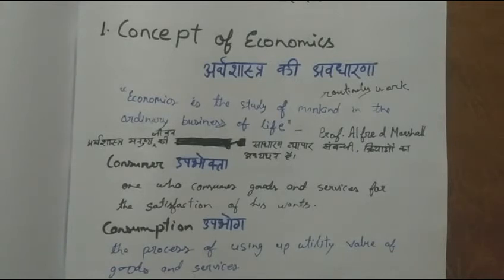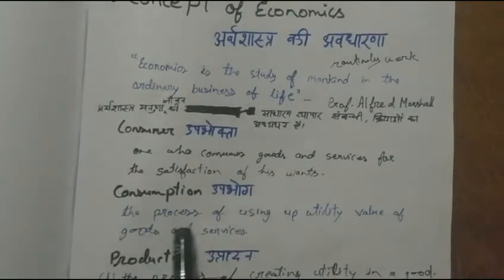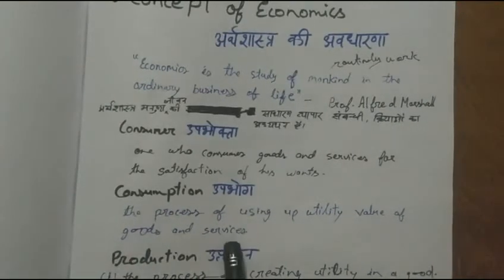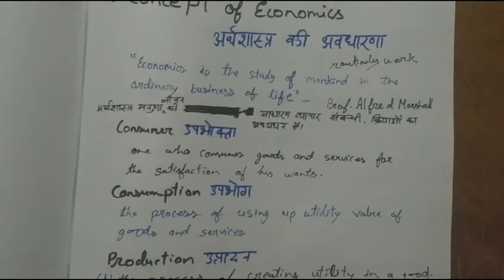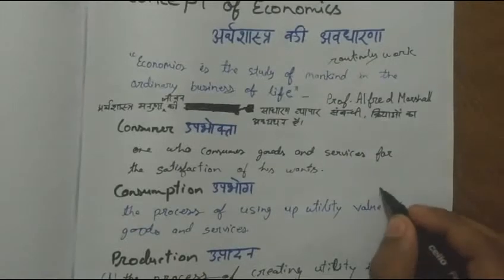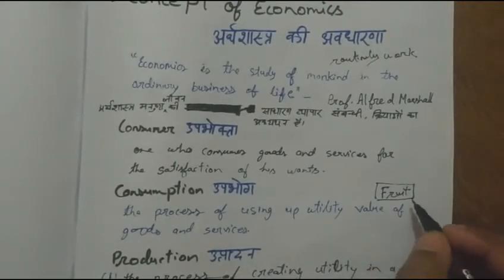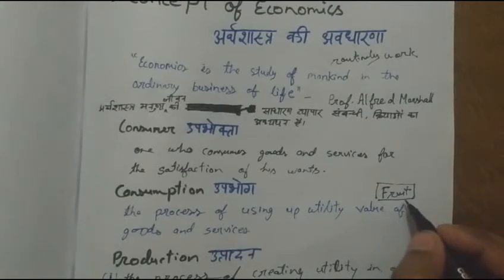The first activity is consumption. Consumption means the process of using the utility value of goods and services — using goods and services for their purpose. For example, if we are hungry and we need to eat something, we get some fruit. If the fruit satisfies our want, then we say it has utility. When we have eaten the fruit, we have used up the utility of that fruit.